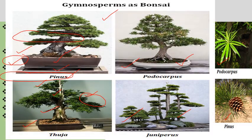Some gymnosperms are grown as bonsai — huge trees grown in small floral pots. This technique of growing large trees in small pots is known as bonsai.